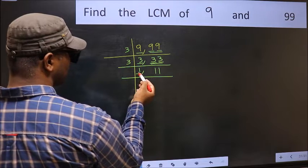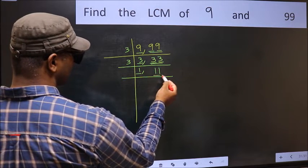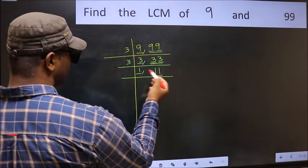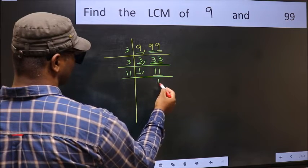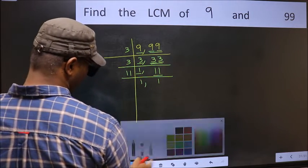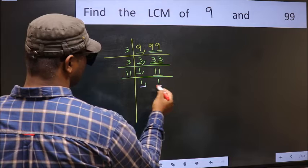Now we got 1 here, so focus on the next number 11. 11 is a prime number, so 11×1 is 11. We got 1 in both places.